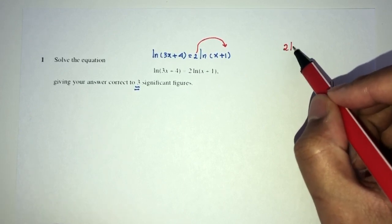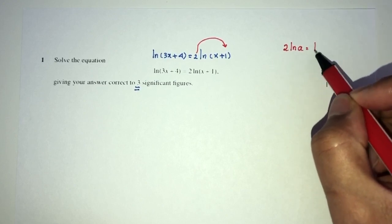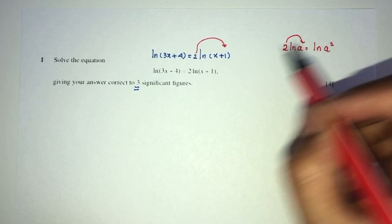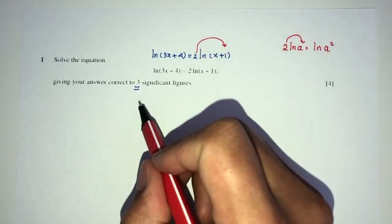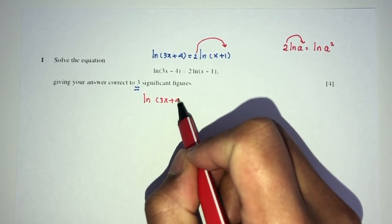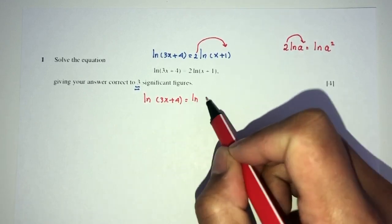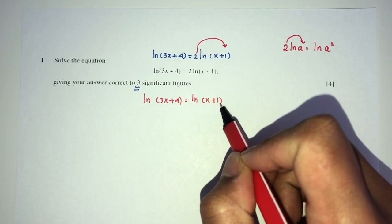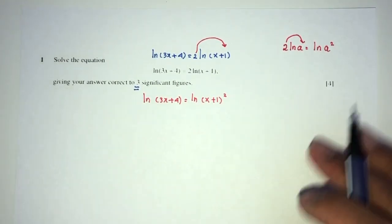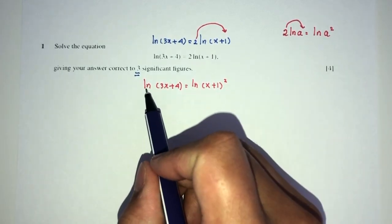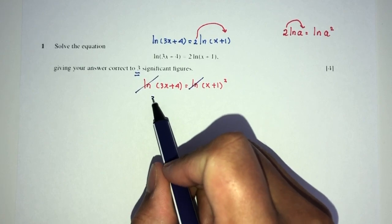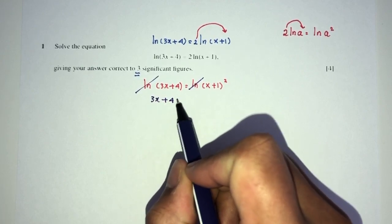For example, we have 2 ln(a) is the same thing as saying ln(a²). We can send the power on top. Same idea. This will become the power over here. Here you will have ln on one side, 3x + 4 equals ln(x + 1)². Now, why did I do this? Because I want to simplify the equation. Because we have just ln on both sides, I can just cancel out.